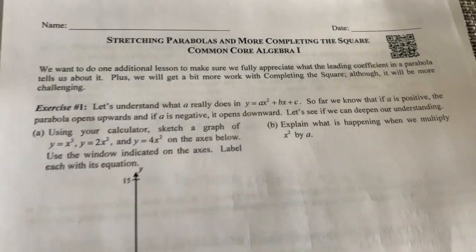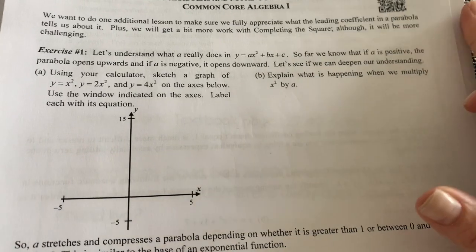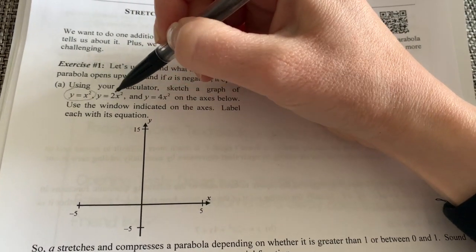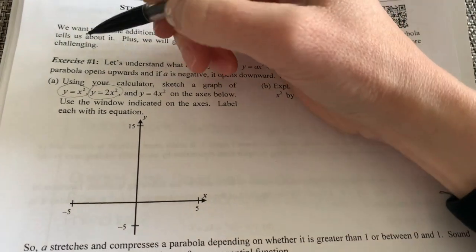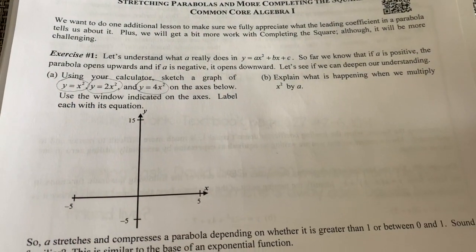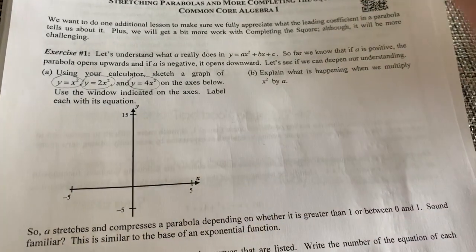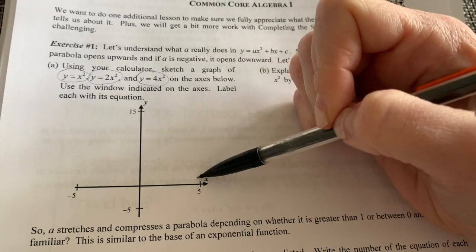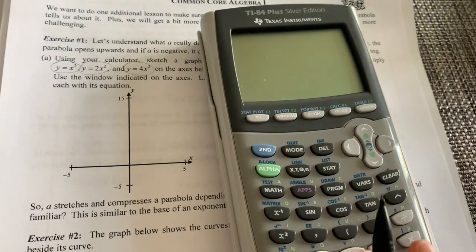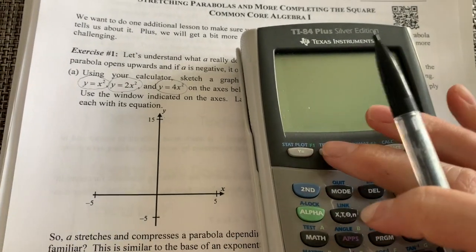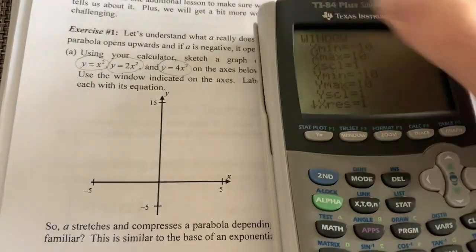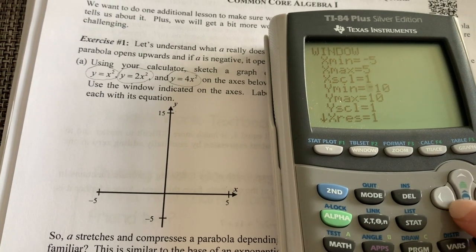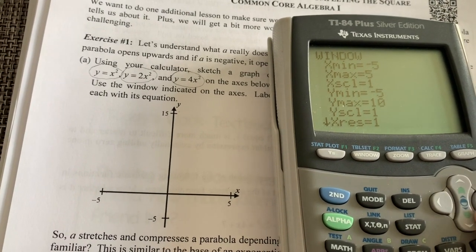For exercise one, we're going to take a look on the calculator and sketch three separate graphs: y equals x squared, y equals 2x squared, and y equals 4x squared. Use the window indicated on the axes — y going from negative 5 to 15, and x from negative 5 to 5. So grab your calculator. I'm going to go to the window and set that up: x min negative 5, x max 5, y min negative 5, y max 15.